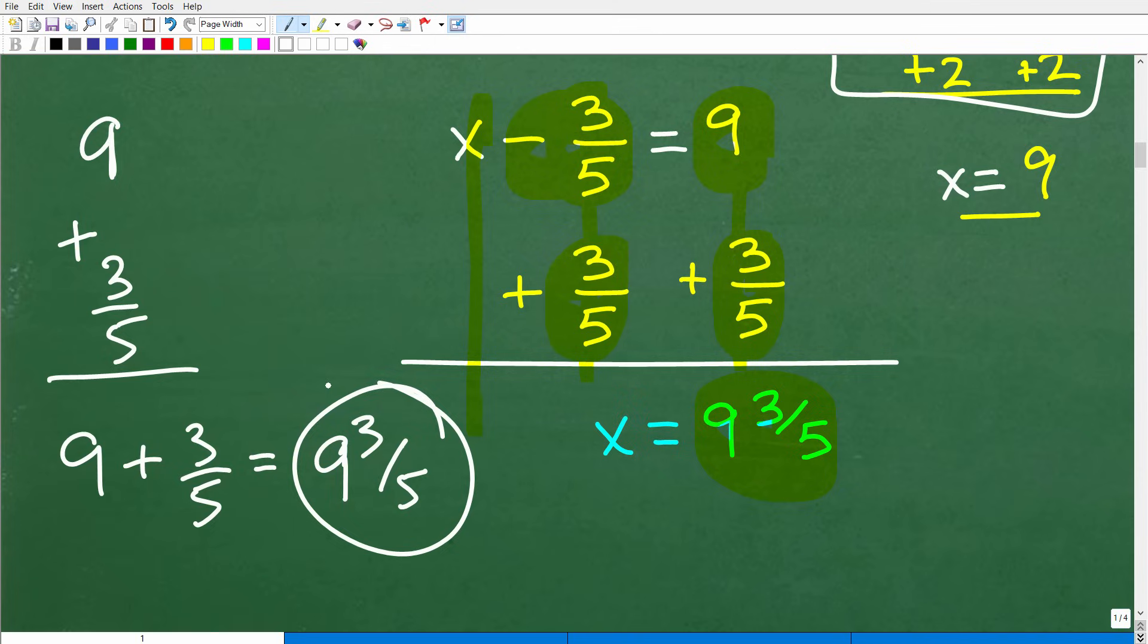And no need to turn this into an improper fraction. In other words, you don't have to go nine times five is 45 plus three is 48, 48-fifths, right? Never do this. Never volunteer to go from here to here, unless you're told to do that by your teacher. If you have a mixed number fraction, leave things as they are. And the same thing holds true. If you have an improper fraction as your answer, don't volunteer to turn that into a mixed number. Just fully simplify and reduce that answer.